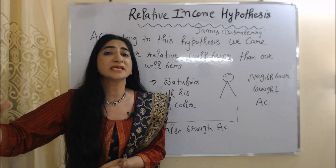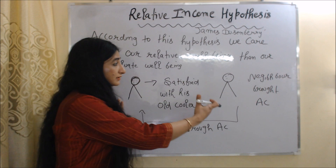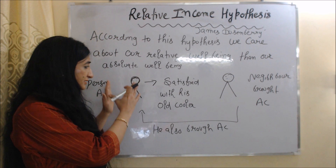For example, person A is satisfied with his old cooler. But suddenly his neighbor bought a new AC. By seeing her, he also bought a new AC. Here his consumption is not affected by his needs — his consumption is affected by the consumption of his neighbor.